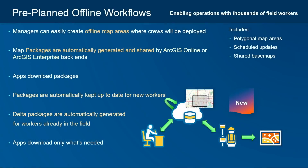Pre-planned offline workflows enable efficient offline operations for thousands of workers taking data into the field. Managers can easily create offline map areas corresponding to where crews will be deployed. Packages for these areas are automatically generated and shared by the ArcGIS Online or ArcGIS Enterprise backends. Apps then download these packages. The packages are automatically kept up to date as the data changes. Delta packages are automatically generated for workers already in the field, and the packages themselves are updated for any new workers coming into the field.